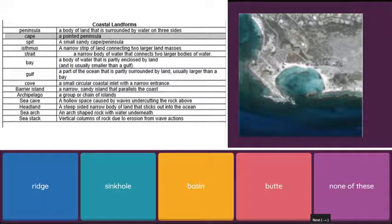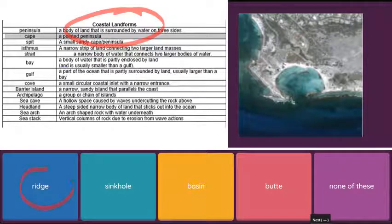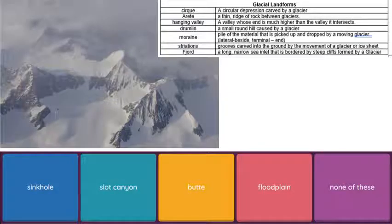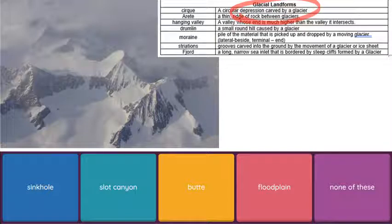This picture is obviously the ocean, so we're going to look at coastal landforms. Once again, check these terms against the list and find which one matches what you see in the picture. Here we've got a bunch of snow and ice — we know those are glaciers. Go to the glacial landforms list and try to pick the term that matches what you see or what is being pointed to in the picture.